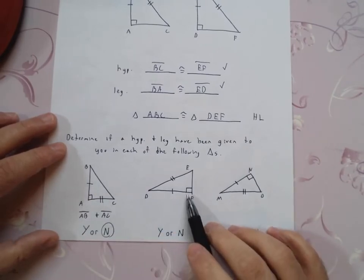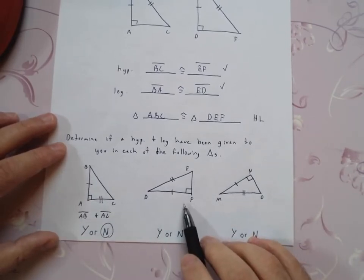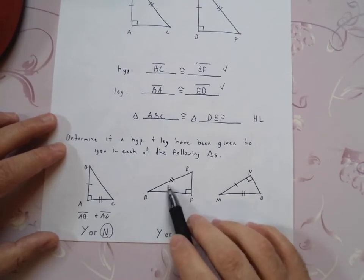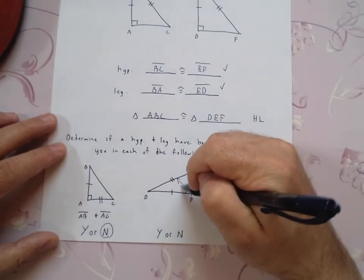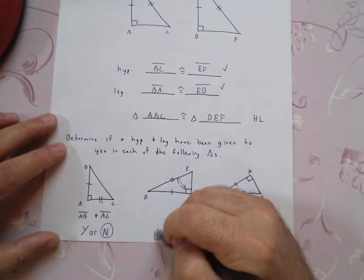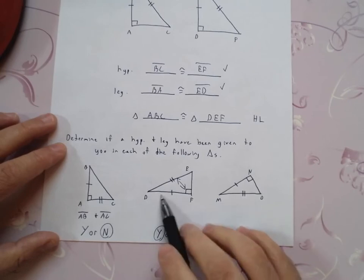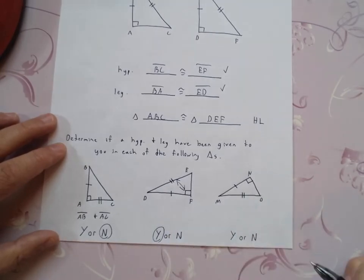If I look at this guy, is this a hypotenuse and a leg? Well, let's look here. That's definitely a leg because it forms a right angle. This is across from my right angle. So yes, that's a hypotenuse. So yes, that is a hypotenuse and that is a leg. Because again, this is the longer side. That's one of my legs that forms my right angle.